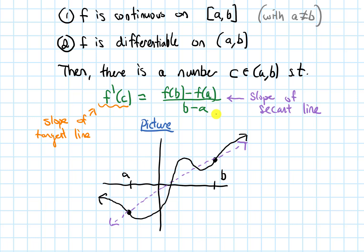In other words, where the tangent line and the secant line are going to be parallel. In my picture, somewhere here the tangent line looks parallel to the secant line — that's one point. Another point is somewhere over here. And there's one more place where they look parallel, maybe somewhere here. So there are three places in my picture where the tangent line is parallel to the secant line. I'll label these x-values c1, c2, and c3. The Mean Value Theorem says there's got to be at least one.